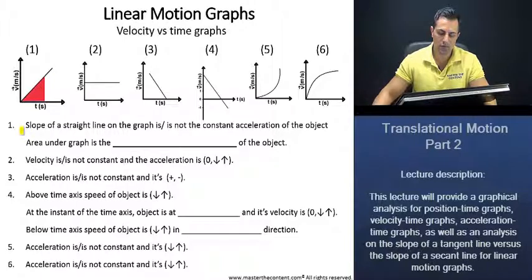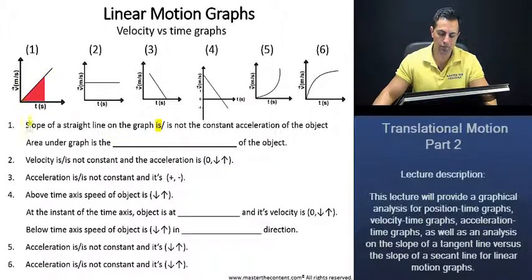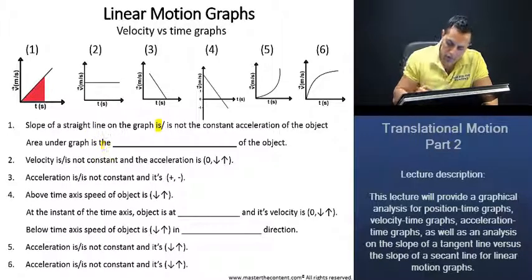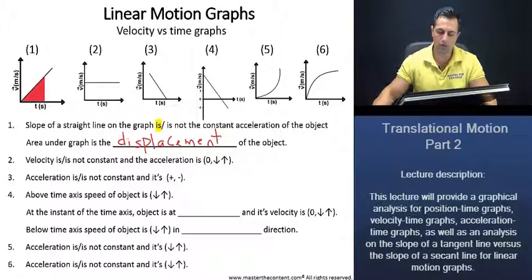What is the first graph telling us? The slope of a straight line on the graph is the constant acceleration of the object. Whenever you have a straight line as such, the area under the graph is actually going to be your displacement — the displacement of the object.